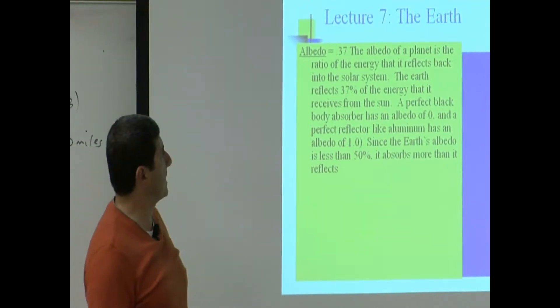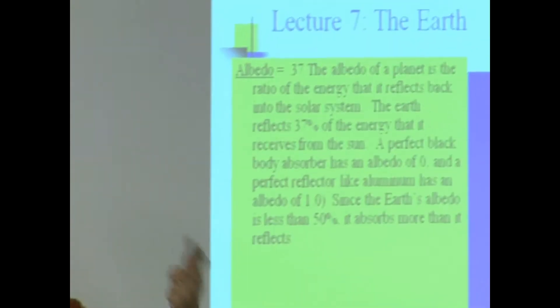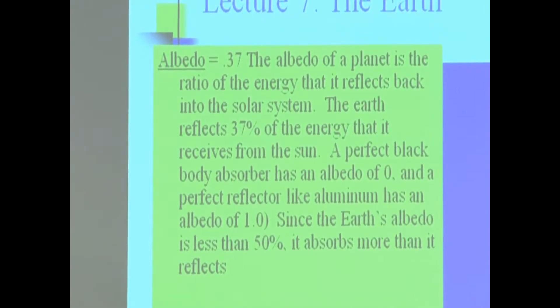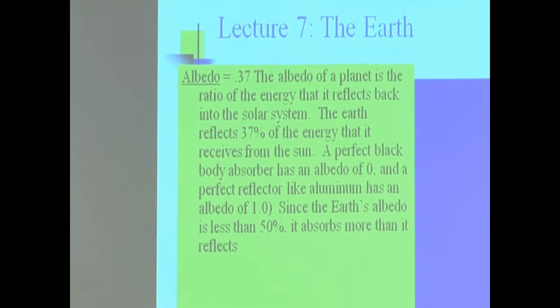The albedo of a planet is the ratio of the energy that it reflects back into the solar system. The Earth reflects 37% of the energy that it receives from the sun. So a certain amount of energy comes from the sun. The Earth absorbs 63% of it, reflects 37%.